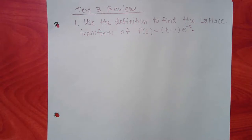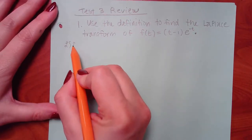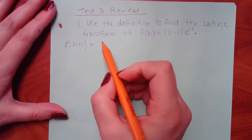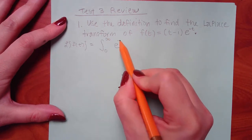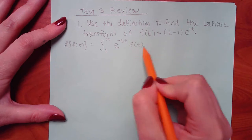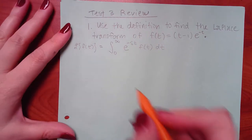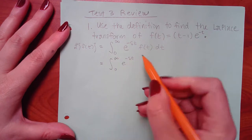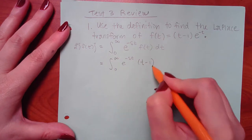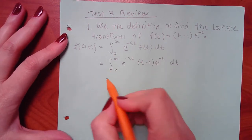The idea is you're going to have to use the definition of a Laplace transform. When you're doing the definition of a Laplace, the Laplace of any function is the integral from zero to infinity of e to the negative st times that function dt. So we're going to have e to the negative st times (t minus 1) e to the negative t, because that's my function.